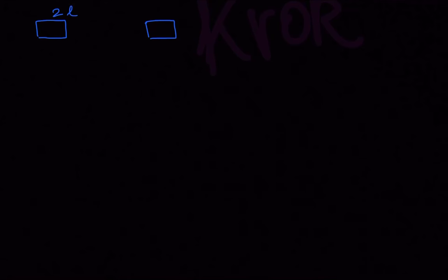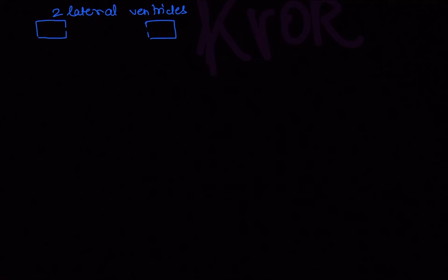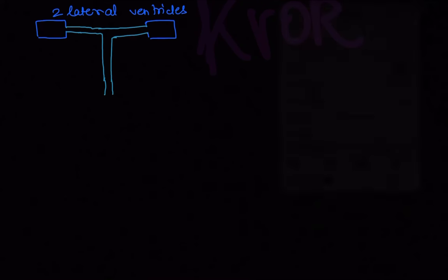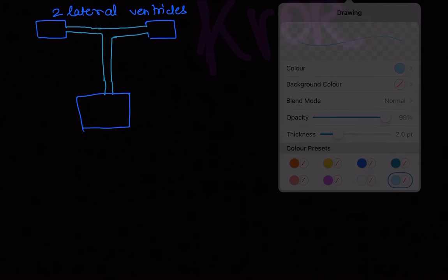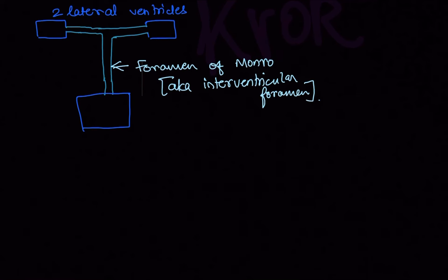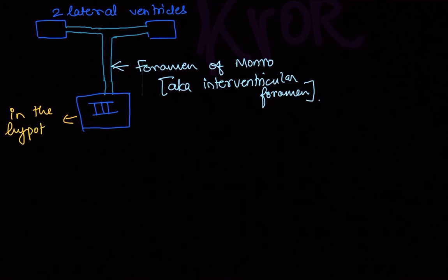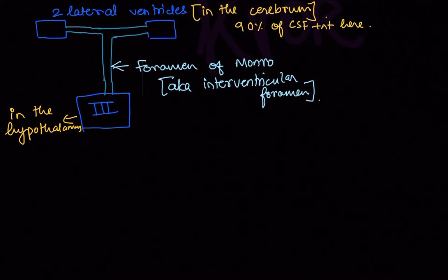There are two lateral ventricles present in the cerebrum, and 90 percent of CSF is present here. These lateral ventricles open into the third ventricle by a foramen called the foramen of Monroe, also known as the interventricular foramen. The third ventricle is located in the hypothalamus.